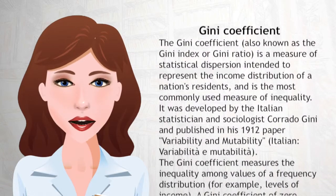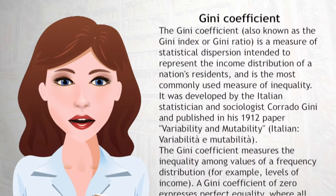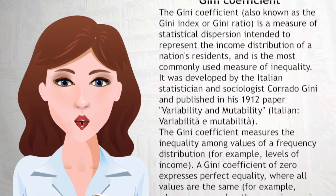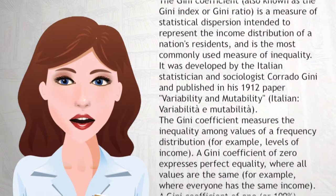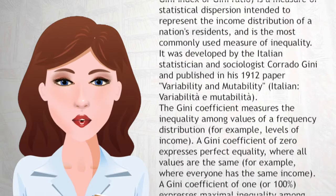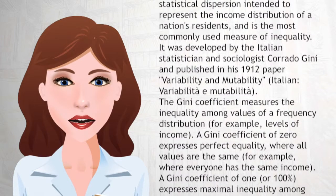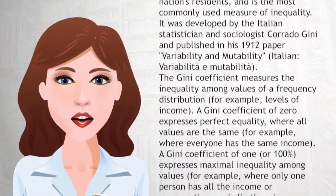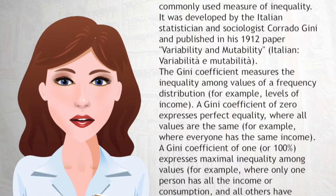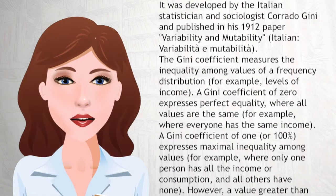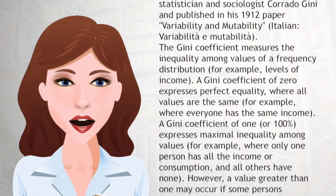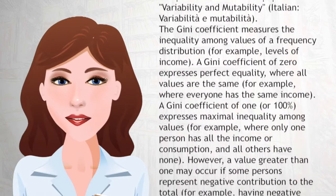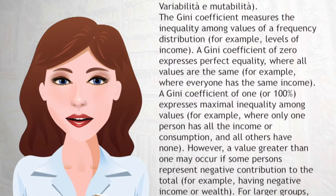The Gini coefficient measures the inequality among values of a frequency distribution, for example, levels of income. A Gini coefficient of zero expresses perfect equality, where all values are the same, for example, where everyone has the same income. A Gini coefficient of one or 100 percent expresses maximal inequality among values, for example, where only one person has all the income or consumption, and all others have none.